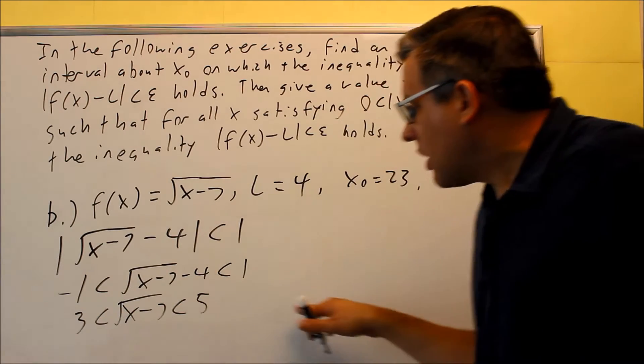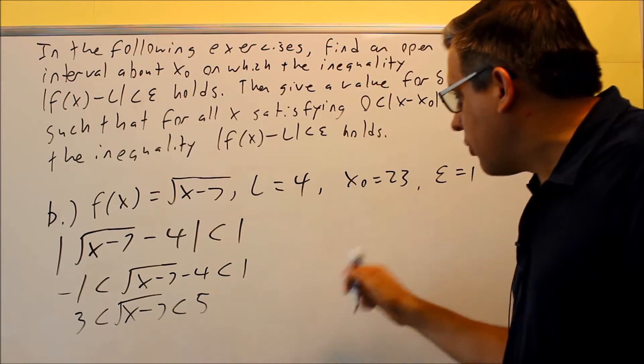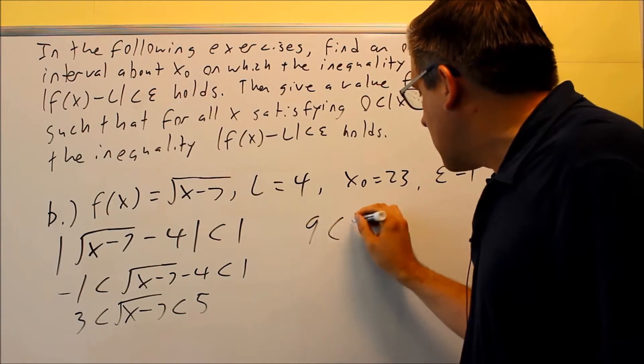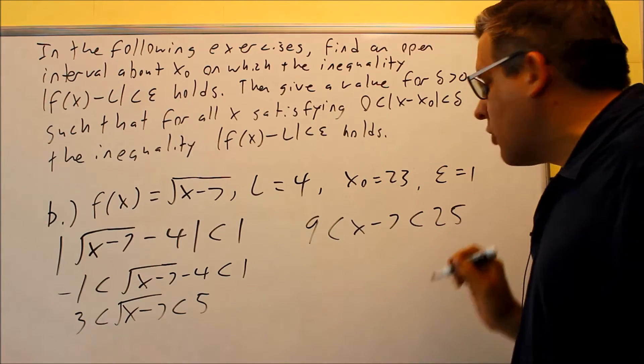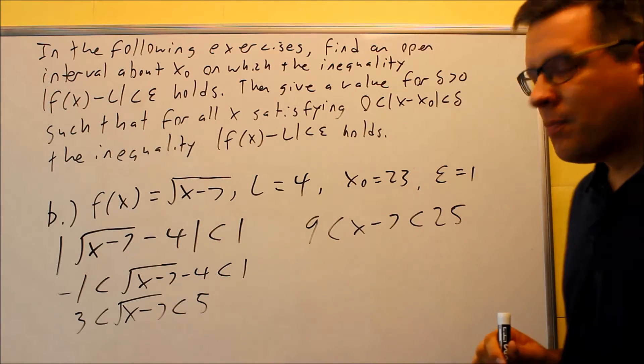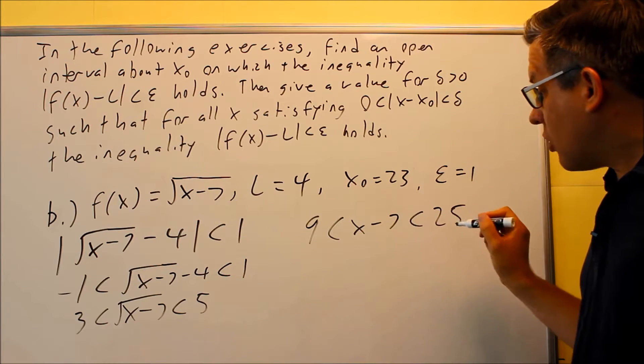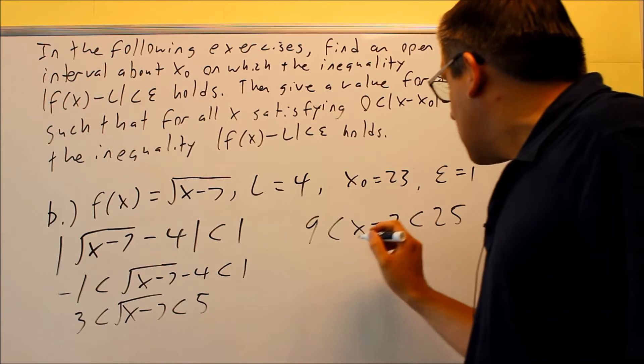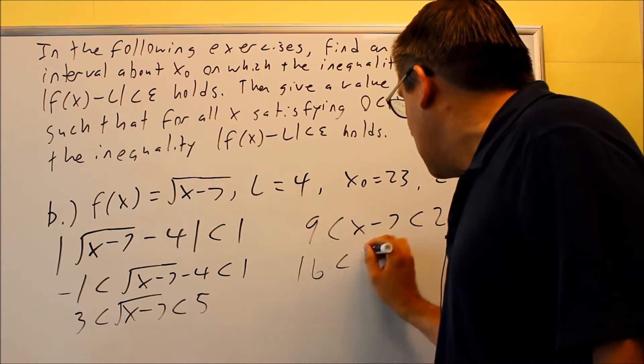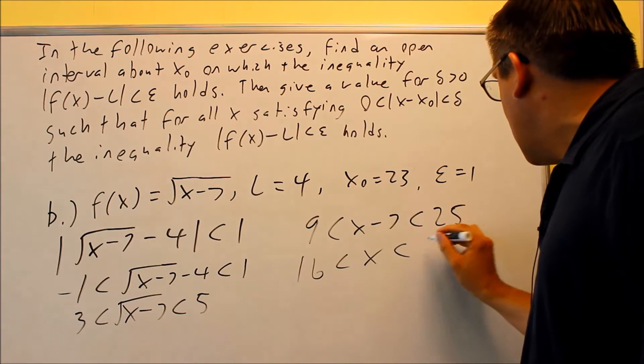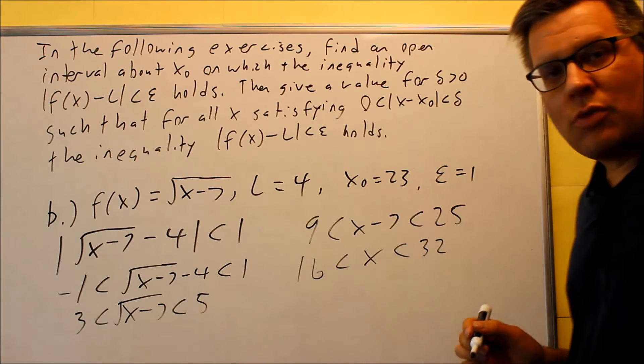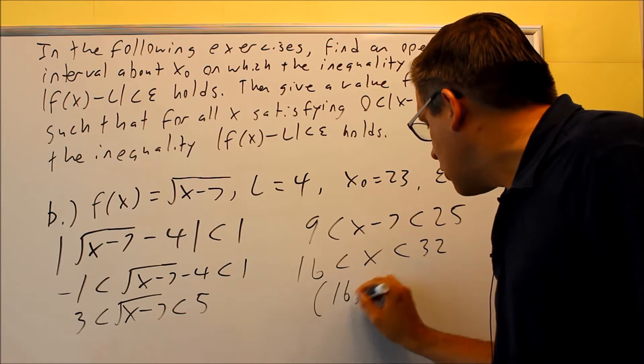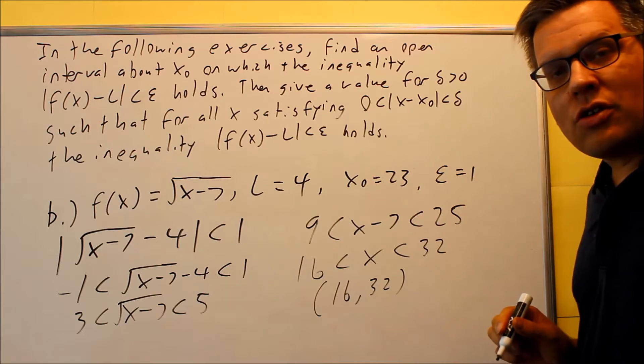You're going to square everything. So square it all the way through, you'll get 9 less than x minus 7 less than 25. We're squaring that to get rid of the radical. Now that the radical is gone, we can add 7 to all the sides. So if we add 7, then we're going to get 16, add 7 there, and you're going to get 32, which means that the open interval should be 16 to 32.